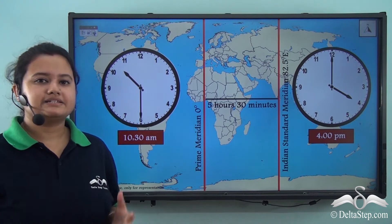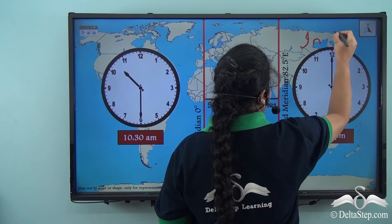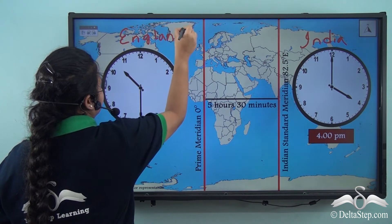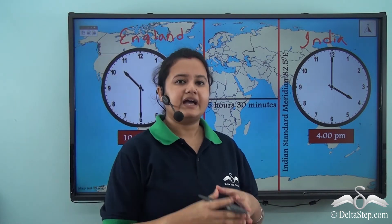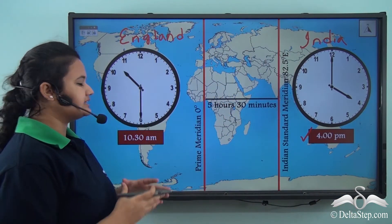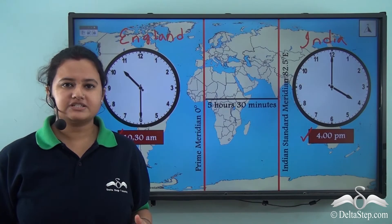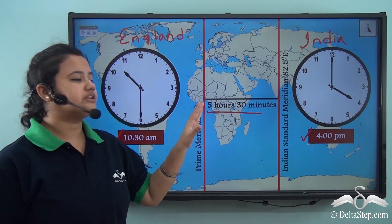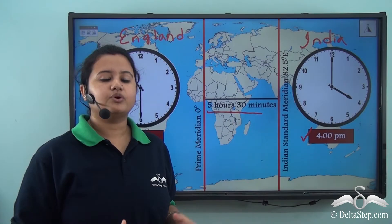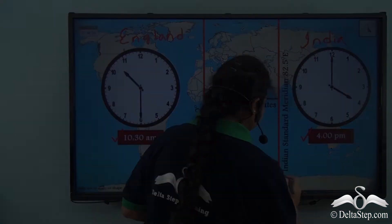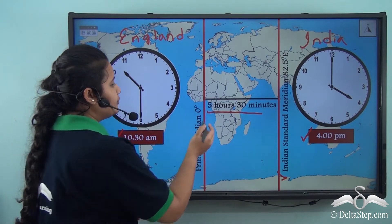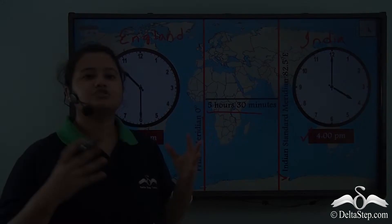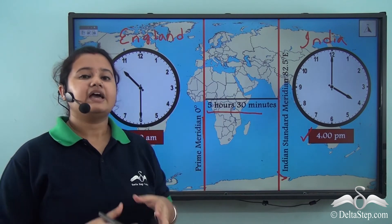Now this image shows the timings of India and England. We can see that presently in India it is 4 pm, while in England the time is 10:30 am — so approximately there is a time difference of 5 and a half hours. This time difference happens because both these countries follow different time zones. India follows time according to the Indian standard meridian, whereas England follows time according to the prime meridian. Since both these longitudes are different, their local times are different.